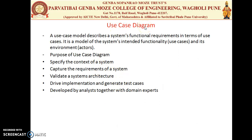The Use Case Diagram is described as system functional requirements in terms of use cases. It contains the system's intended behavior called a Use Case, and its environment which is called the Actor. The purpose of the Use Case Diagram is to: first, specify the context of the system; second, capture the requirements of the system; third, validate a system architecture; and fourth, drive the implementation and generate test cases. It is developed by the analyst with the domain expert.